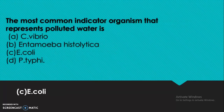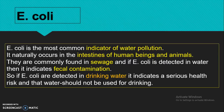The most common indicator organism that represents polluted water is E. coli. E. coli is the most common indicator of water pollution. It usually occurs in the intestines of human beings and animals and is commonly found in sewage. If E. coli is detected in water, it indicates fecal contamination, and that water should not be used for drinking.